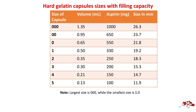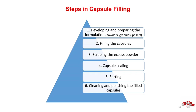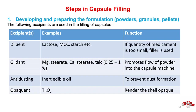Steps in capsule filling: 1. Developing and preparing the formulation (powders, granules, pellets); 2. Filling the capsules; 3. Scraping excess powder; 4. Capsule sealing; 5. Sorting; 6. Cleaning and polishing filled capsules. Excipients used in capsule filling include: Diluents such as lactose, MCC, starch (used when quantity of medicament is too small); Glidants such as Mg stearate, Ca stearate, talc (0.25–1%, promotes powder flow into capsule machine); Anticaking agents (inert edible oil to prevent dust formation); Opaquing agent TiO2 (renders shell opaque).